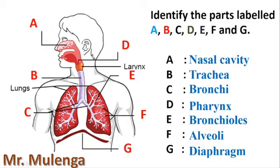Then we have the part which is called B, which is the trachea. The trachea, as we can see, is also called the windpipe. So what is the function of this trachea?